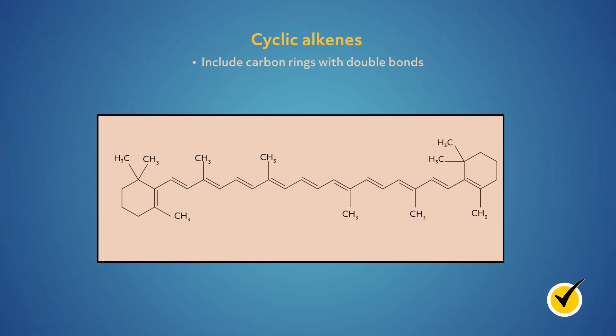There are also cyclic alkenes that include carbon rings with double bonds. While according to the IUPAC, these are technically separate from acyclic alkenes, it's common to refer to cycloalkenes as alkenes. Beta-carotene, a red-orange pigment in plants and fruits, is an example of a large cycloalkene.